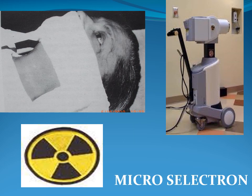On the right side is a device called the microselectron. Since radioisotopes emit radiation, we cannot physically handle them ourselves. This device handles the radioisotopes and places them inside the patient's body.